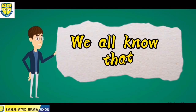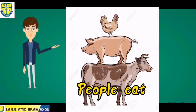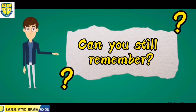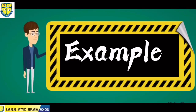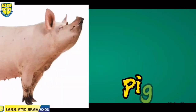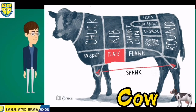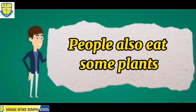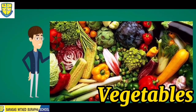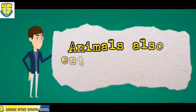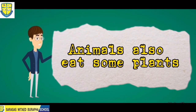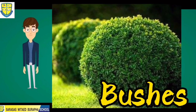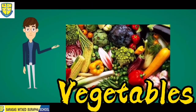We all know that people eat animals. Can you remember those animals that people can eat? Just like our examples here — we have pig, cow, and chicken. People also eat some plants, like vegetables and fruits. Animals also eat some plants, like grass, bushes, and even fruits and vegetables.